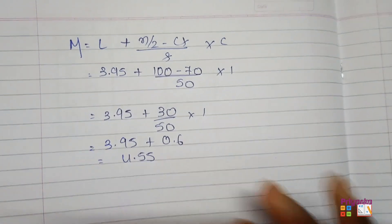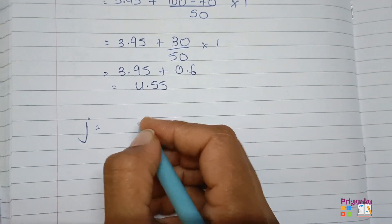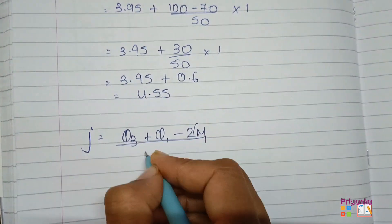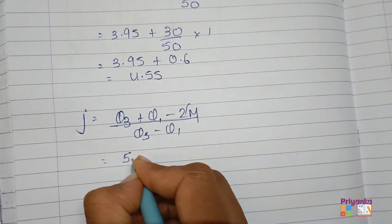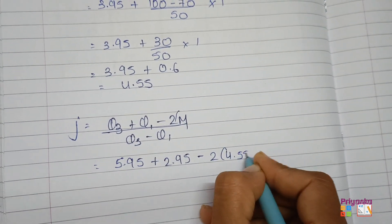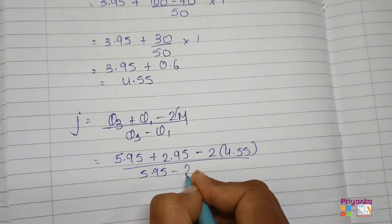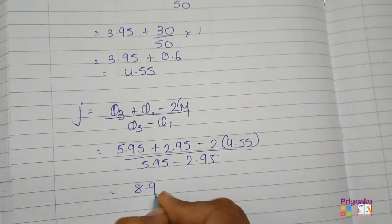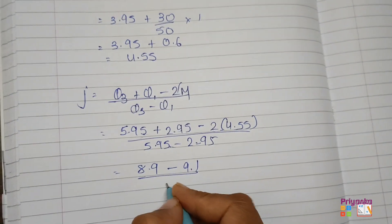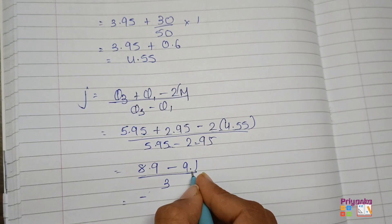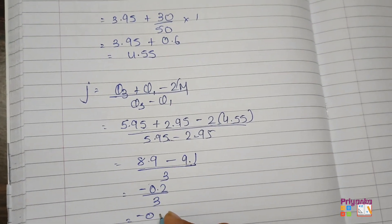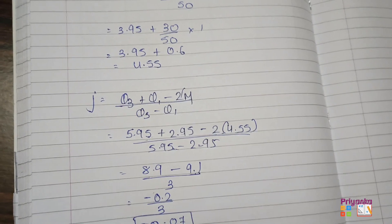Now we apply Bowley's coefficient of skewness formula: Sk = (Q3 + Q1 − 2 × Median) / (Q3 − Q1) = (5.95 + 2.95 − 2 × 4.55) / (5.95 − 2.95) = (8.90 − 9.10) / 3.00 = −0.20 / 3 = −0.0667 ≈ −0.07. This is the final answer for question number 8.